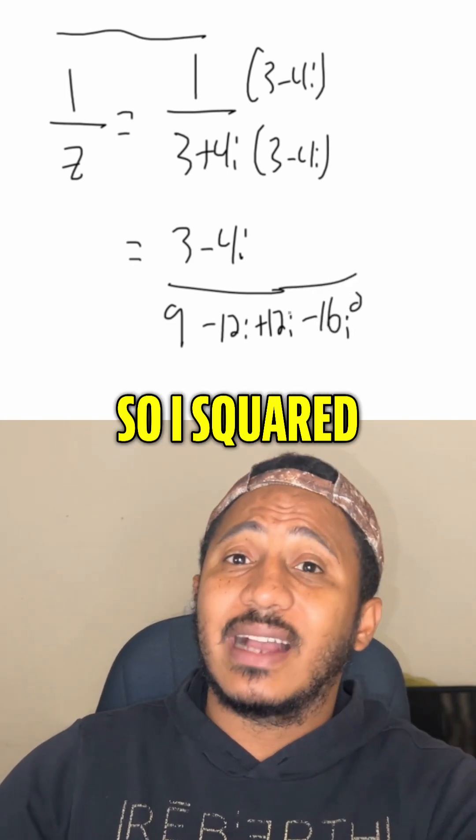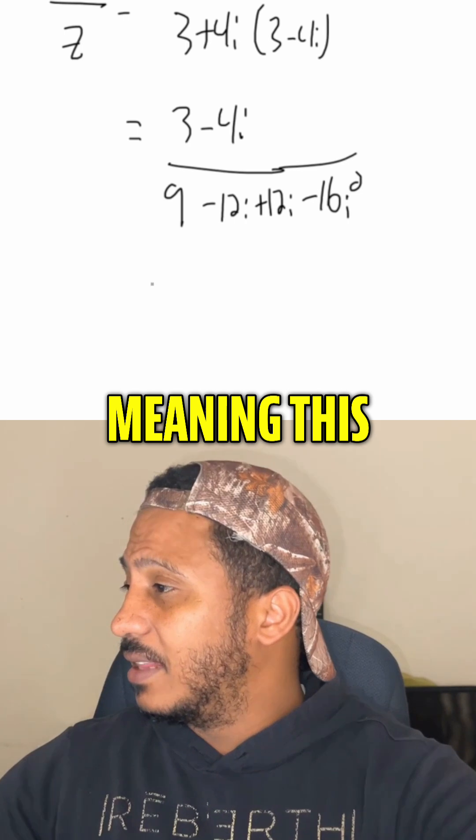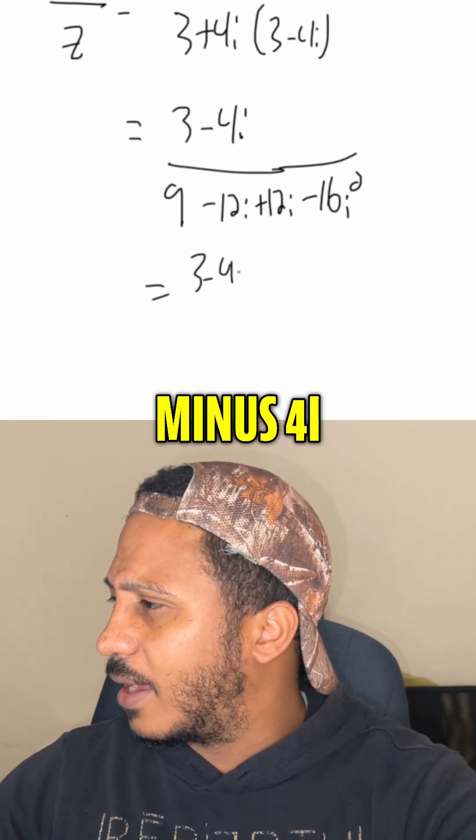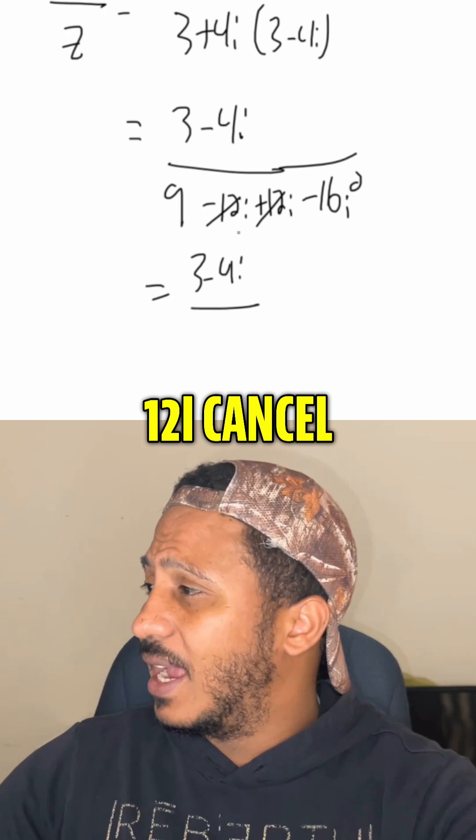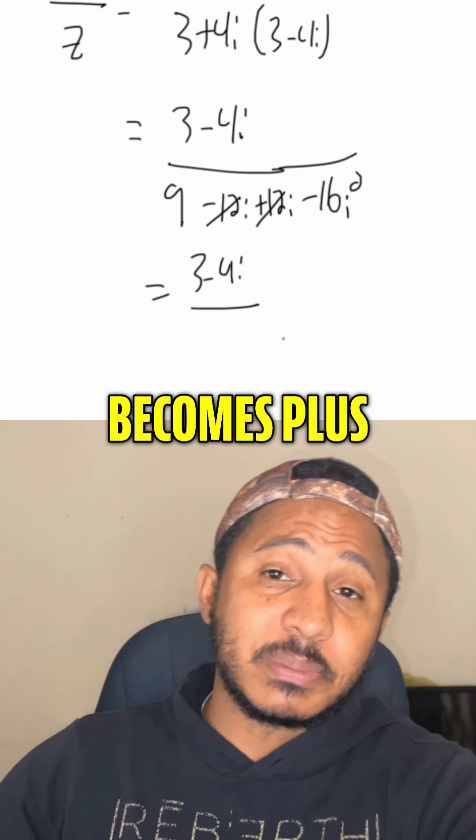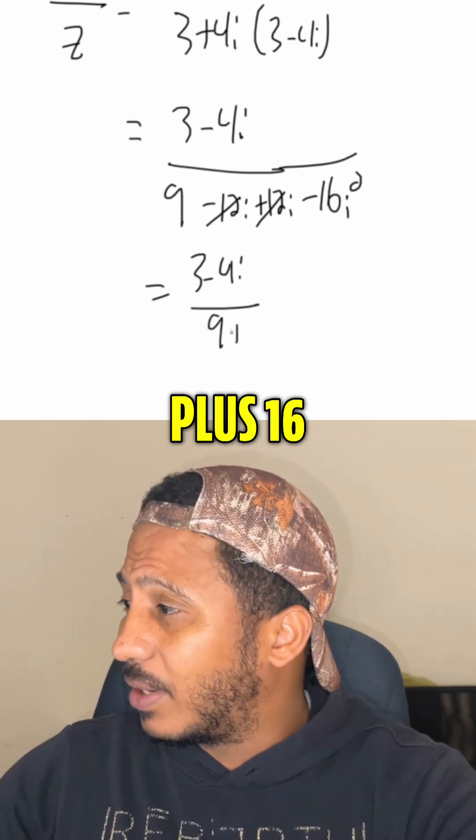Remember, i squared is negative 1, so i squared is negative 1, meaning this becomes 3 minus 4i divided by, well, these negative 12i and 12i cancel, and then this negative 16i squared becomes plus 16, so that's 9 plus 16.